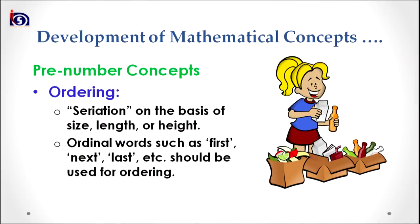The third sub-concept under pre-number concept is ordering. Ordering can be referred to as seriation on the basis of size, length, or height. We can put objects in order on the basis of less and more size, short and long height, or short and long length. The concept of ordering can be facilitated through words such as order, first, next, last, etc. These are the words which should be used to facilitate children in gaining the concept of ordering.